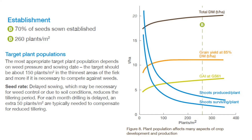Interestingly, the wheat growth guide also suggested that we needed an extra 50 plants for every month planting was delayed. So assuming a three month delay — October, November, December — we would need 300 plants for December drilling.